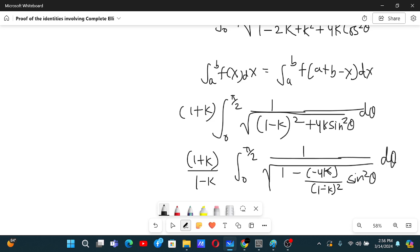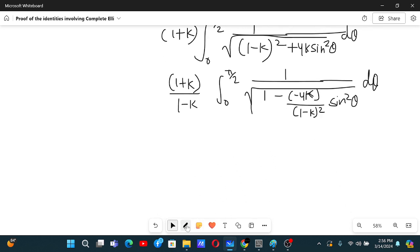Now we know that this is actually our input value, m square. So that's why we can say that 1 plus k by 1 minus k and then this is complete elliptic integral of first kind with the input as 2 times square root of minus k by 1 minus k.